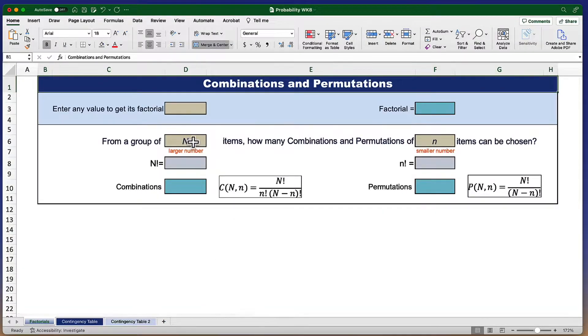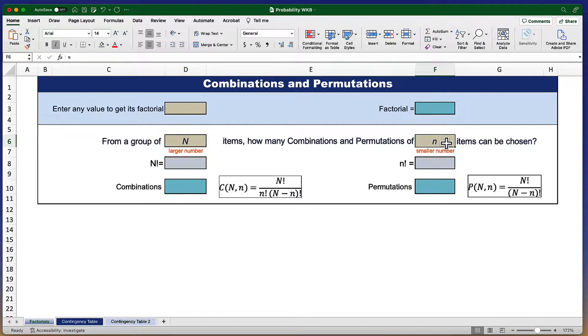So now, let's take a look at how we can do this using our Excel spreadsheet. You see here that there are spaces for a larger number and a smaller number. Each of those numbers will create a factorial in this box right here.